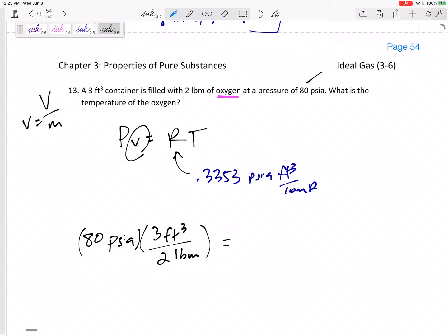All right, so that's what we have on the left-hand side. Look at those units. PSIA feet cubed divided by pound mass. On the right-hand side, we have 0.3353 PSIA. Let's keep up with the units real carefully.